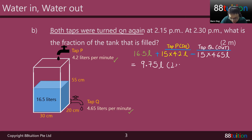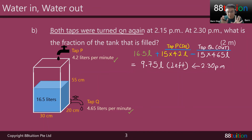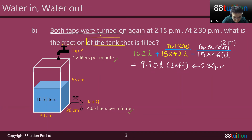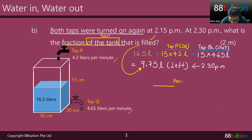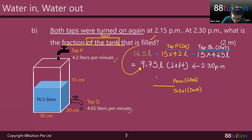That 9.75 liters is left after this 15 minutes — this is at 2:30 PM. The question is asking about the fraction of the tank. How much is filled? This amount is filled, which is 9.75 liters. So I need a fraction — something over something. The top is what's filled, and the bottom is the total capacity of the tank.